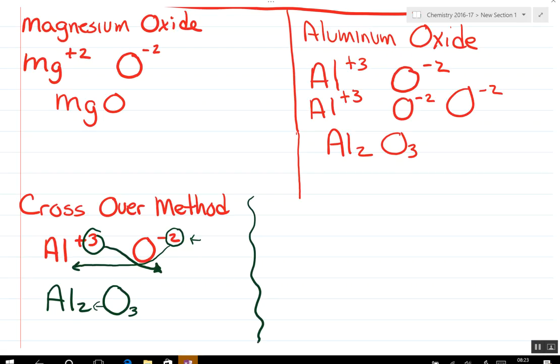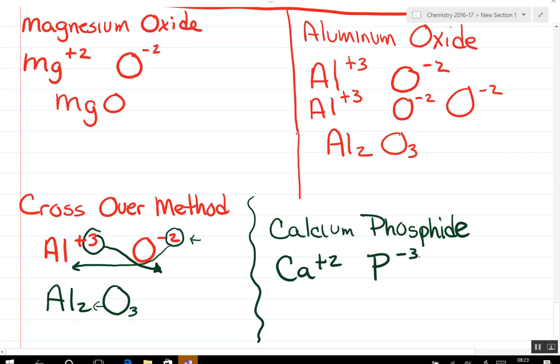And so if I had this, calcium phosphide. Ca is plus two, phosphate is minus three. Now you could use the crossover method or you could do what I did above. The common number between the two is six. What times two gives me six? Ca three. What times three gives me six? Two. So there's a couple of different ways to figure this out.